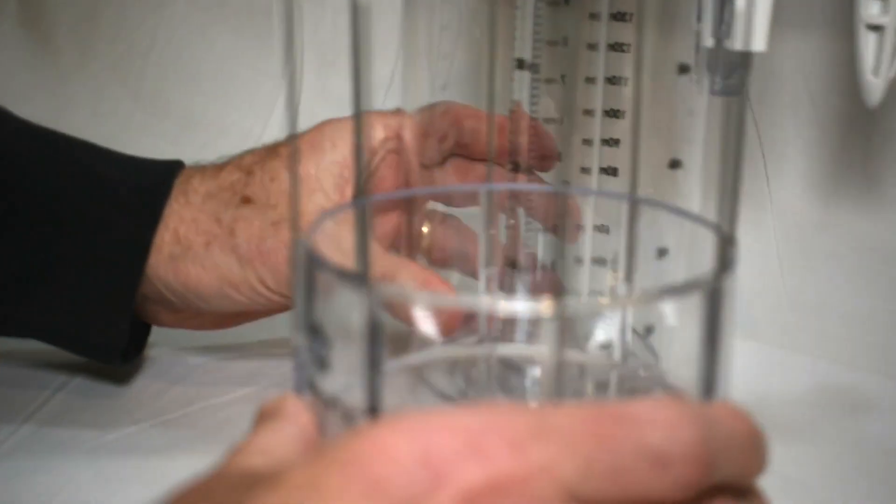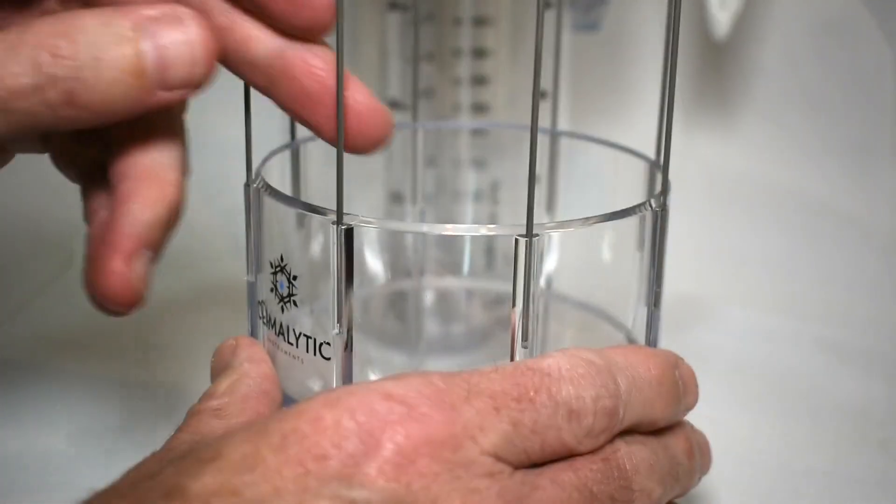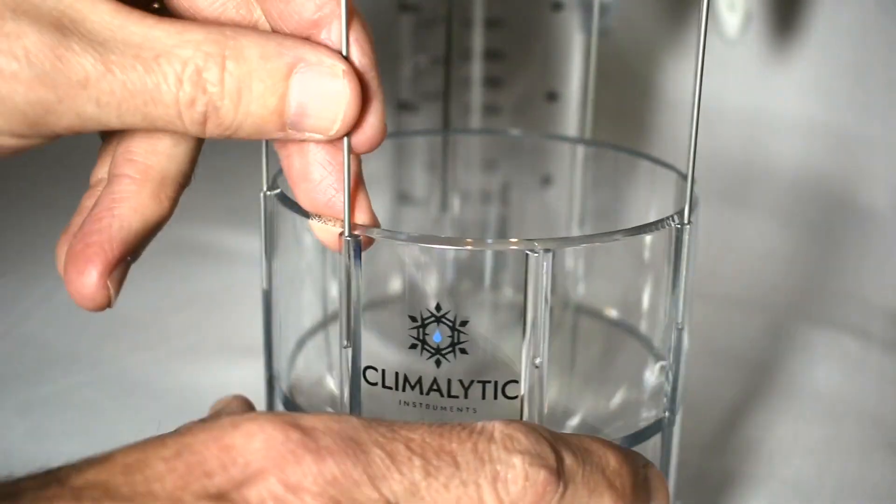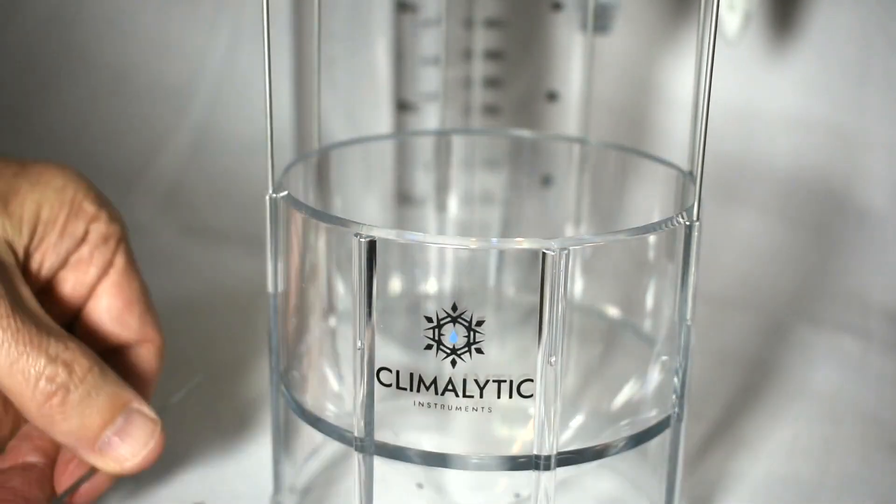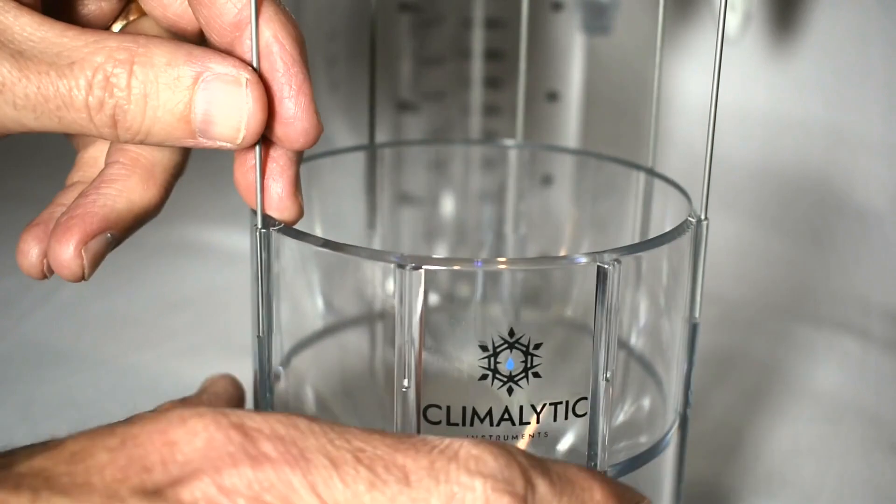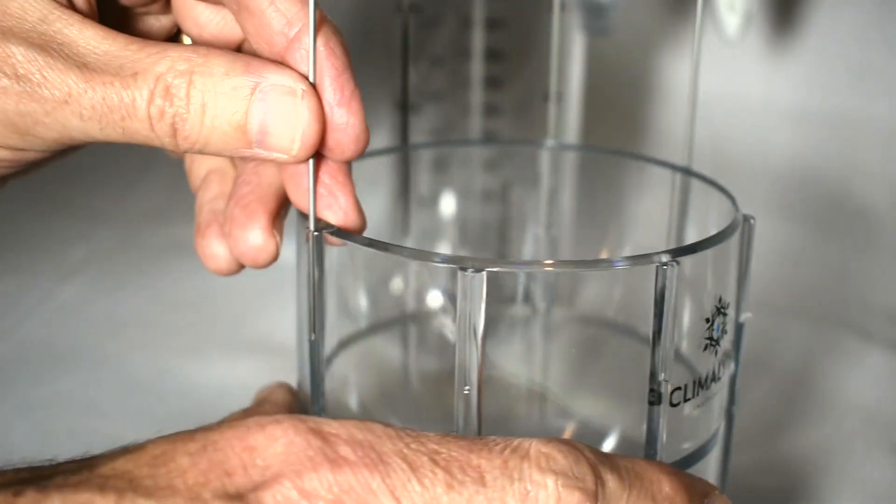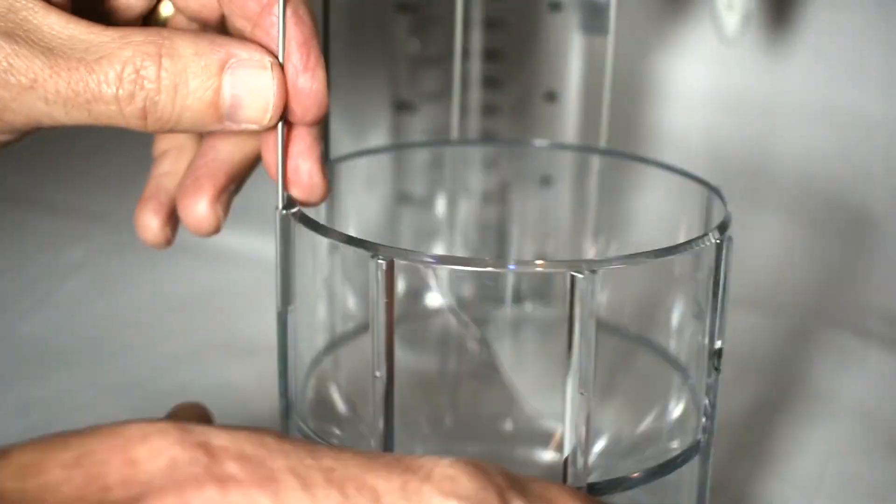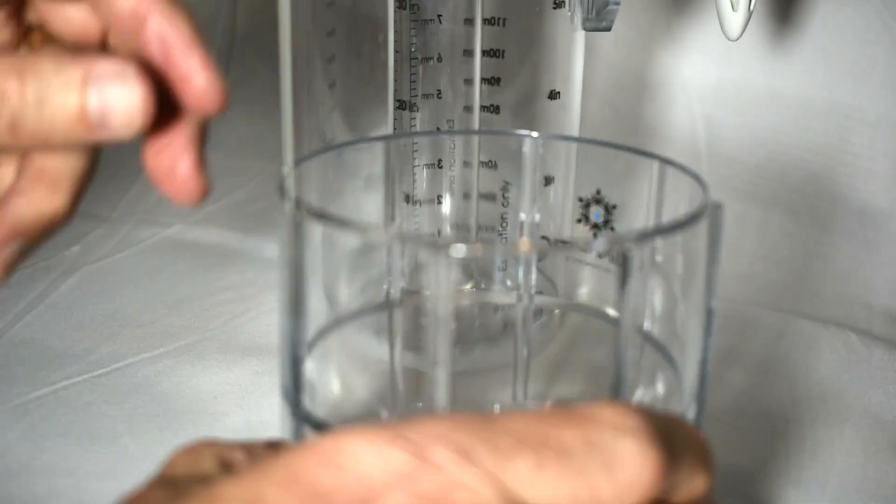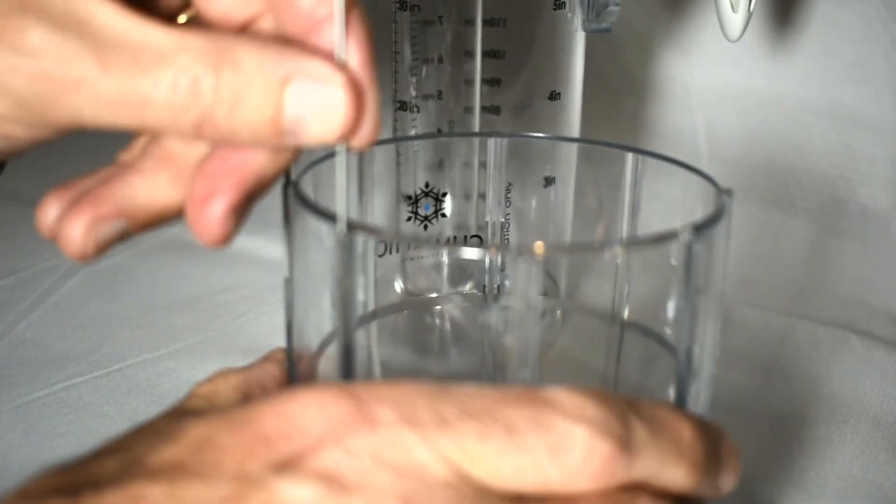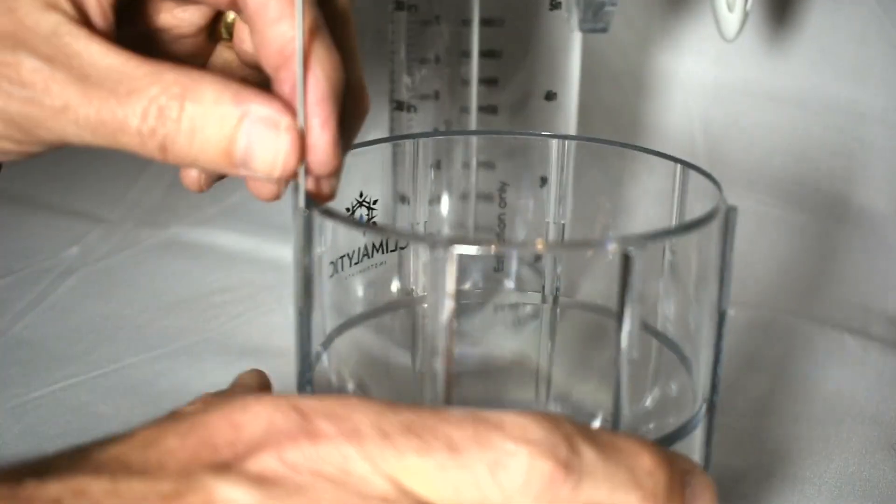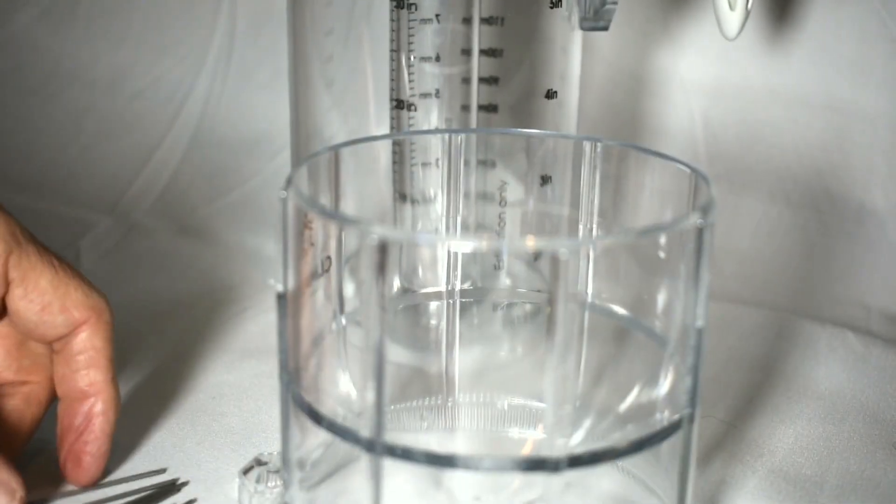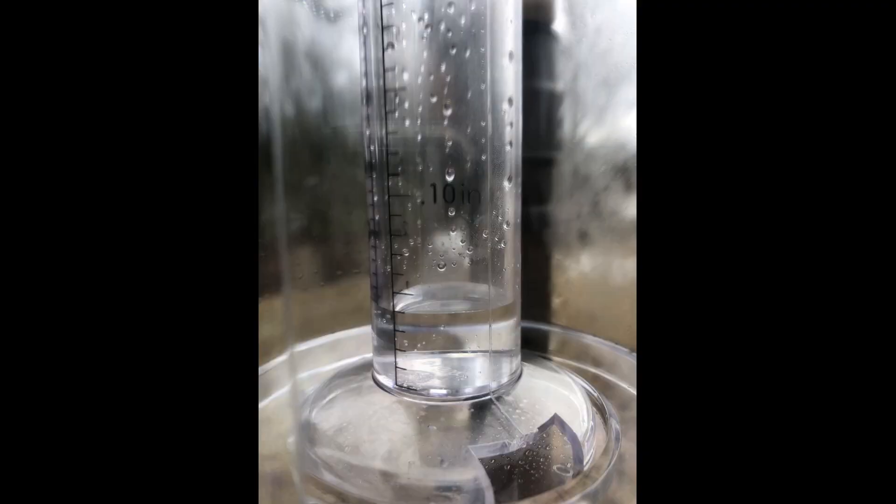As I mentioned, the cap has eight bird spikes on it that are removable. You can either remove them permanently and not use them or remove them seasonally. Bird deterrent rods were one of the things that people really wished for so we're going to offer that.